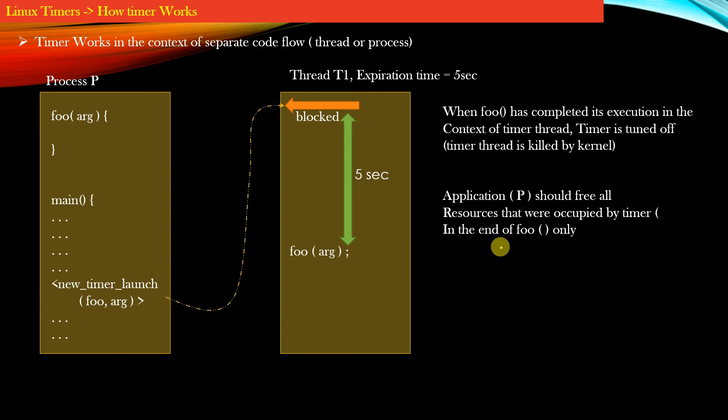Now it might be possible that in order to prepare this argument, your application must have malloced certain data structures. And those data structures were passed as an argument to this timer function foo. So it is your responsibility to free these data structures at the end of this foo function. Just before the timer function has completed its work, it should free all the resources.